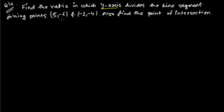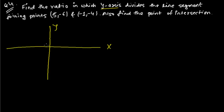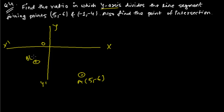Now the y-axis is dividing the line joined by these two points. Let me make a rough diagram. This is my x-axis, this is my y-axis, this is my origin. So the point 5, negative 6 is somewhere here. Another point is negative 1, negative 4, which is somewhere around here.